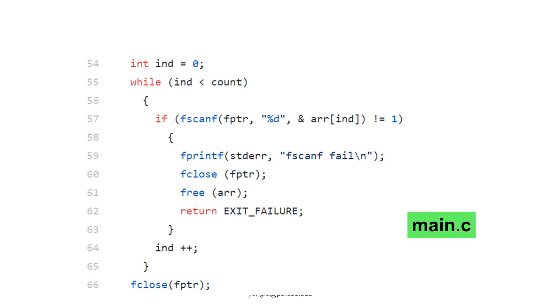If anything goes wrong, this program closes the file in line 60, releases the allocated memory in line 61, and returns EXIT_FAILURE in line 62. If the program reads all integers successfully, it reaches line 66 and closes the file.